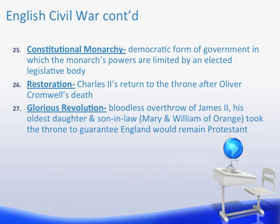A constitutional monarchy is what is eventually established — that's a democratic form of government in which the monarch's powers are limited and they rule with a parliament. Restoration: after Oliver Cromwell's death, they removed his son from the leadership role and brought Charles II back to be King of England. The Glorious Revolution is the bloodless overthrow of James II, when his oldest daughter and his son-in-law, Mary and William of Orange, take the throne. This guarantees that England will remain Protestant, because a lot of the underlying issue in the Civil War was religion — a battle between Catholicism and Protestantism.